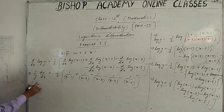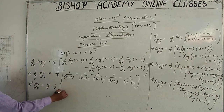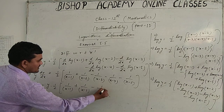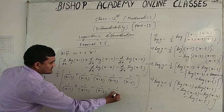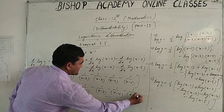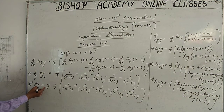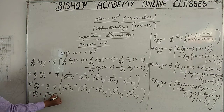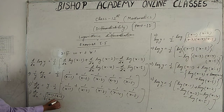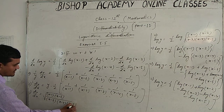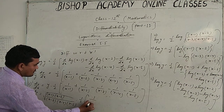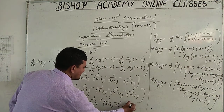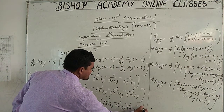This implies dy/dx equals y into (1/2) times [1/(x minus 1) plus 1/(x minus 2) minus 1/(x minus 3) minus 1/(x minus 4) minus 1/(x minus 5)]. And from equation one, substituting the value of y, dy/dx equals root of [(x minus 1)(x minus 2) upon (x minus 3)(x minus 4)(x minus 5)] into (1/2)[1/(x minus 1) plus 1/(x minus 2) minus 1/(x minus 3) minus 1/(x minus 4) minus 1/(x minus 5)].